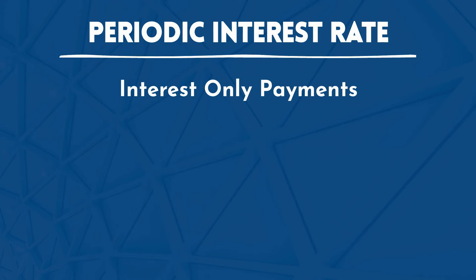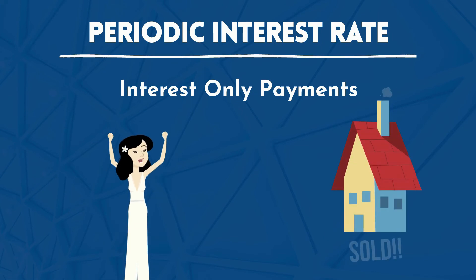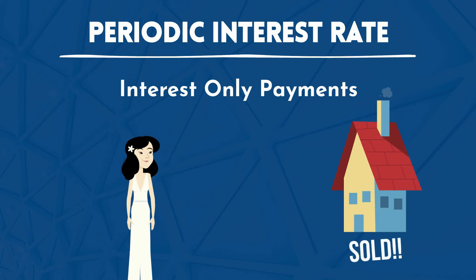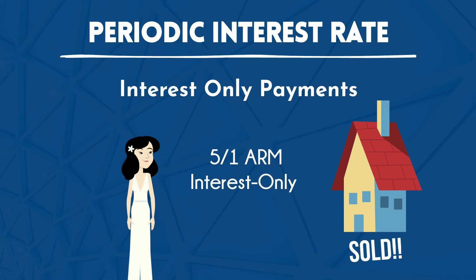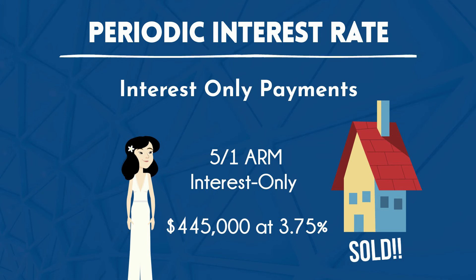Let's do an example together. Reagan has finally decided to purchase a new home. She works closely with a financial planner, and after speaking with her financial planner, she decides that the best product for her would be a 5-1 interest-only ARM. Reagan's new loan amount will be $445,000, and her interest rate is 3.75%. What will her interest-only payment be without taxes and insurance?